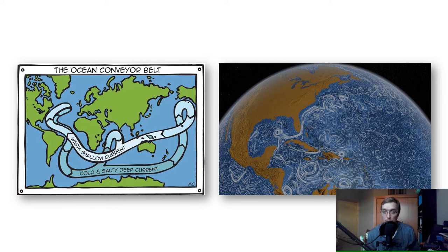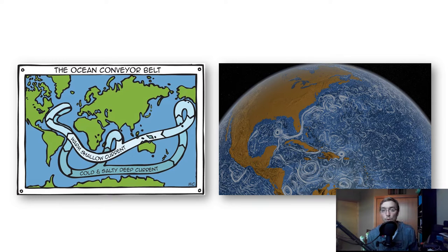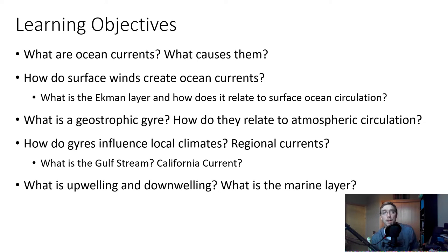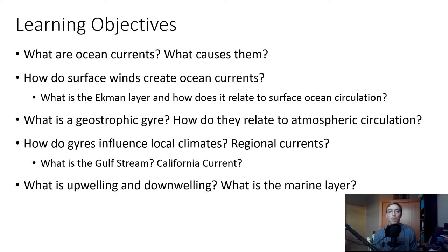We'll also discuss what we call the ocean conveyor belt, which is a combination of warm shallow currents and cold, salty deep ocean currents. We can see examples of these circulating ocean current systems in the image on the right — the Gulf Stream current coming up the Gulf and east coast of the United States, going off through Canada. Our learning objectives today include: what are ocean currents and what causes them, how do surface winds create ocean currents, what is the Ekman layer, what is a geostrophic gyre, and what are the Gulf Stream and California Current.